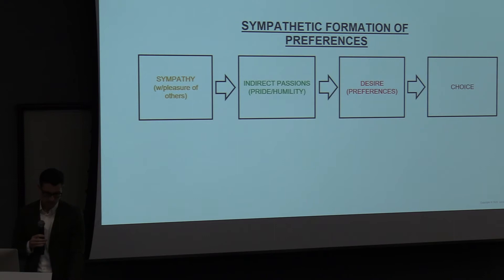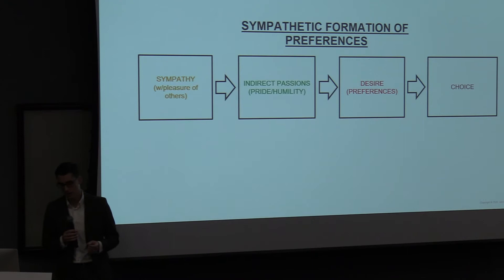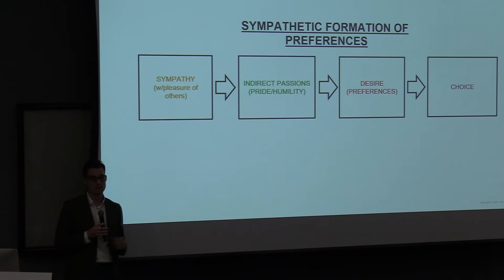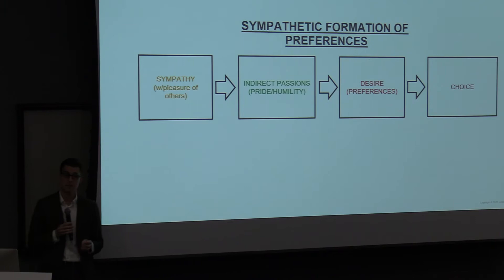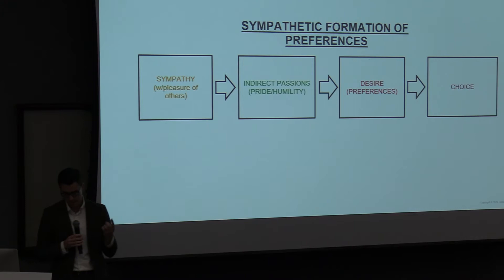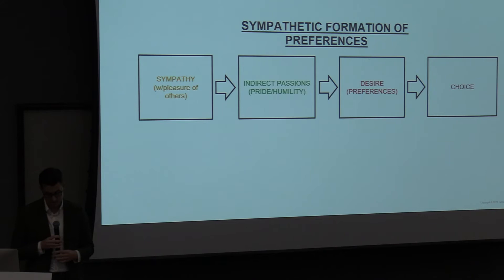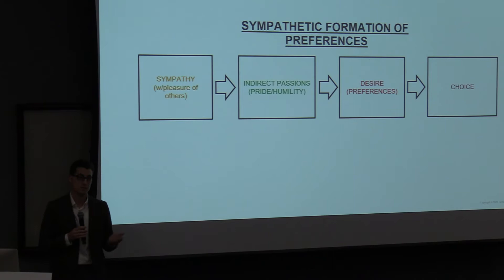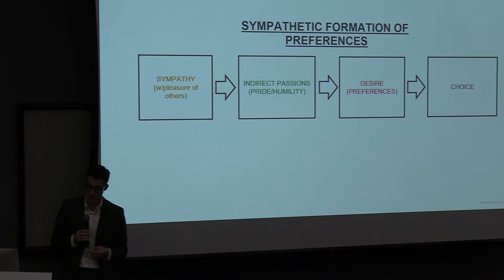Hume briefly states his view on happiness in his famous essay 'Of Refinement in the Arts,' originally called 'Of Luxury.' He says happiness consists in three things: enjoyment, action, and indolence. That one sentence maps very well to four other essays he wrote — the Epicurean, the Stoic, the Platonist, and the Skeptic — which make up a kind of dialogue on the nature of happiness. Enjoyment is the satisfaction of preferences, action is the pursuit of preferences, and indolence is rest that allows you to subsequently enjoy and pursue more things. So indolence is instrumental.